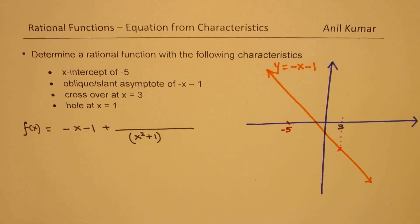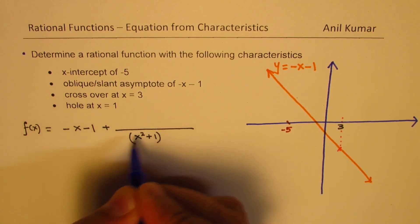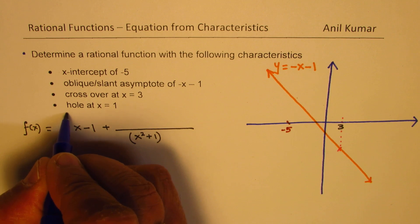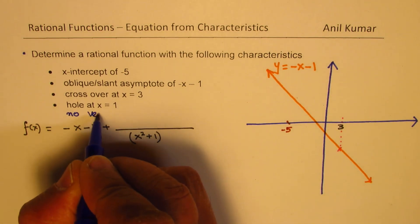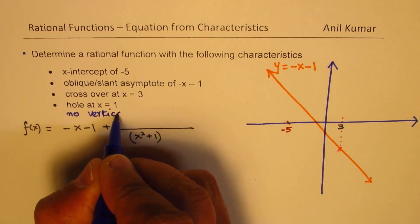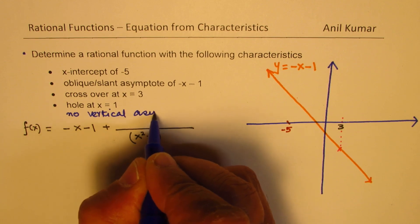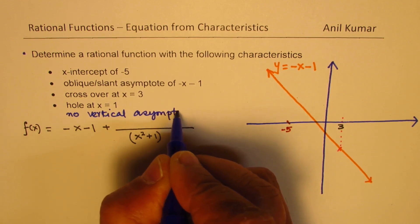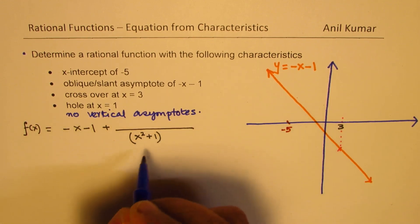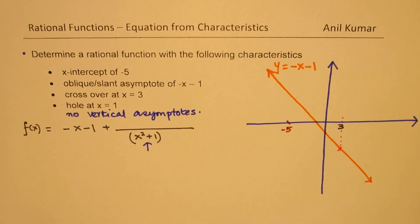So I'm taking a denominator of x squared plus 1. The idea here basically comes from an assumption. Since we have no vertical asymptotes, so I introduce this value. Because x squared plus 1 will not have any vertical asymptotes.